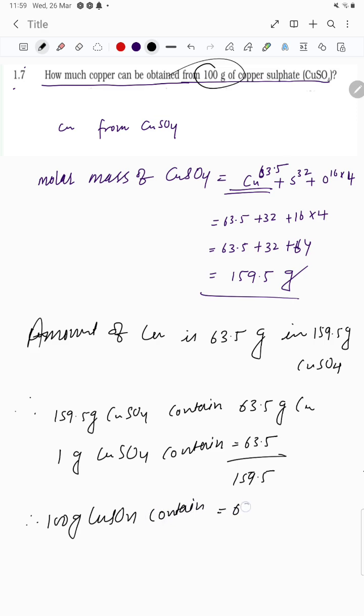63.5 upon 159.5 multiplied by 100. So on solving, it is coming 39.81 grams copper.